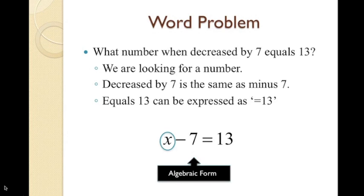We can use any variable to represent the unknown number. Next, we have the phrase 'decreased by 7', which is the same as minus 7. Finally, the last part of the sentence is 'equals 13'. It can be expressed by using the equal symbol and the number 13. So, our equation is x minus 7 equals 13.